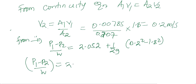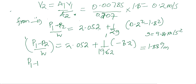The pressure difference P1 minus P2 out of specific weight equals 2.052 plus 1 out of 19.62, which gives negative 3.2. P1 minus P2 equals 1.889 times w the specific weight.